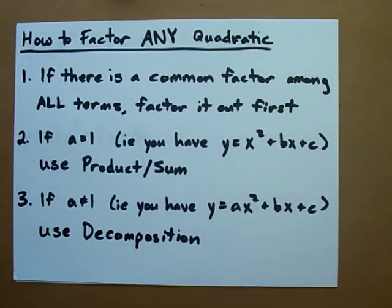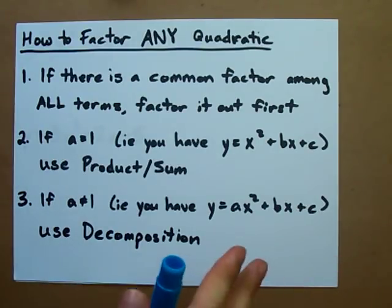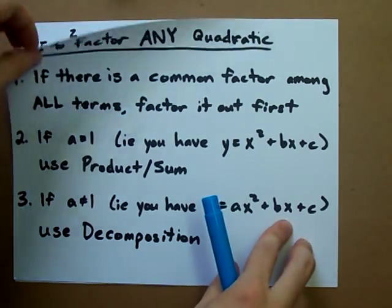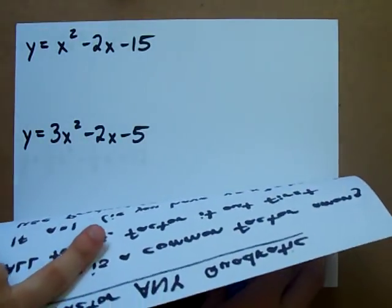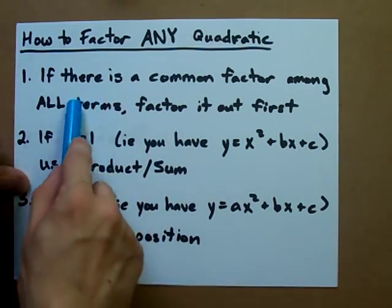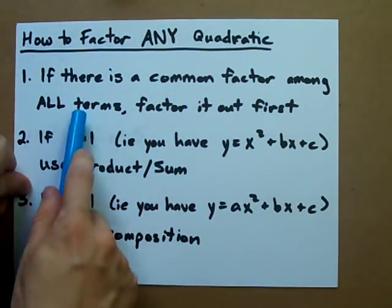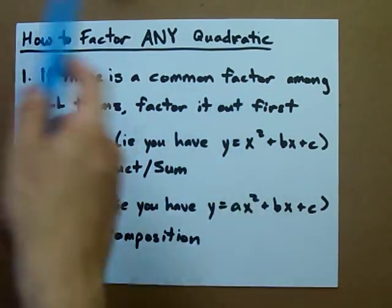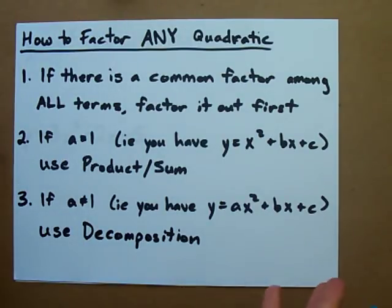Here is a quick three-step process on how to factor any quadratic that's actually factorable. The first thing you have to do when you're given some quadratic equation is that if there's something common to all of the terms, take it out first. It's just gonna make your life easier.